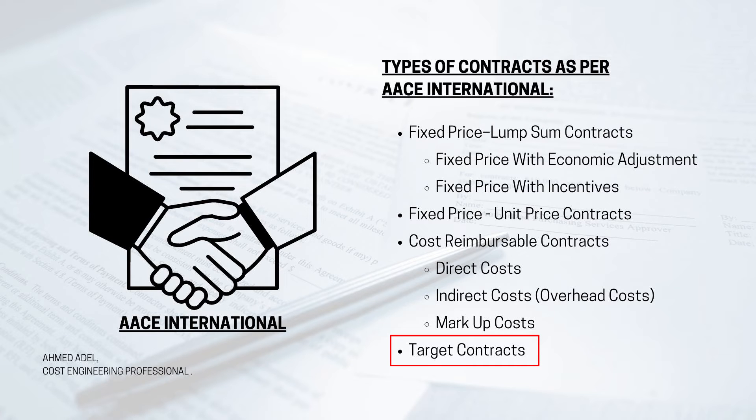With cost reimbursable contracts, direct and indirect costs plus markup are calculated during or after the work and submitted to the client. This puts significant risk on the client, since he doesn't know the total cost when signing. That leads to the fourth type: target contracts, where planning and design are awarded to the contractor and performed on a cost reimbursable basis.